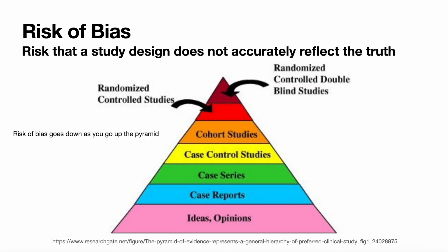We do want to remember our risk of bias pyramid. Risk of bias is the risk that a study design does not accurately reflect the truth. In our risk of bias pyramid, the risk of bias goes down as you move up the pyramid. Randomized controlled double-blind studies are at the tippy-top of the pyramid, with systematic reviews and meta-analyses of randomized controlled double-blind studies above them. So randomized controlled studies have pretty low risk of bias to begin with, as long as the study design is good.